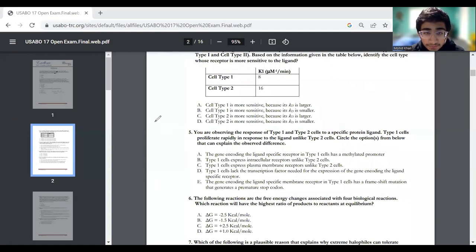Question number six. The following reactions are free energy changes associated with four biological reactions. Which reaction will have the highest ratio of products to reactants at equilibrium? And then we're given the delta G for the Gibbs free energy. So highest ratio of products to reactants, this is going to be a reaction where the reactants would combine to make a product. This would be an anabolic reaction and anabolic reactions are generally exergonic.